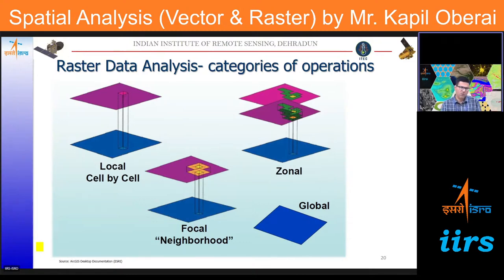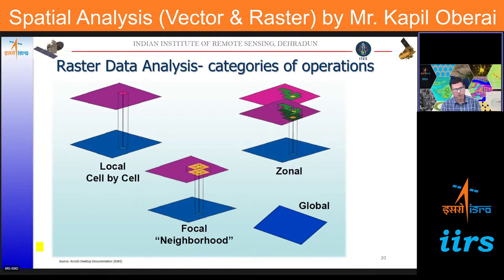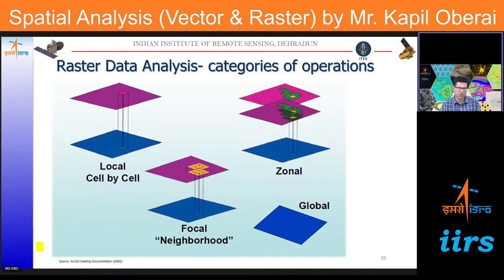To summarize the vector operations covered so far: we understood the concept of vector overlay and then examined various operations including Intersect, Union, Clip, Erase, Symmetric Difference, Dissolve, and Buffer. Now let's move into the categories of operations available under raster data analysis. There are four types: Local, Focal, Zonal, and Global.